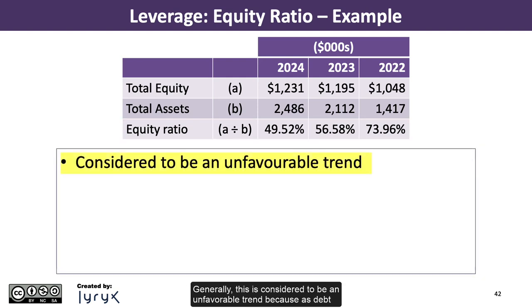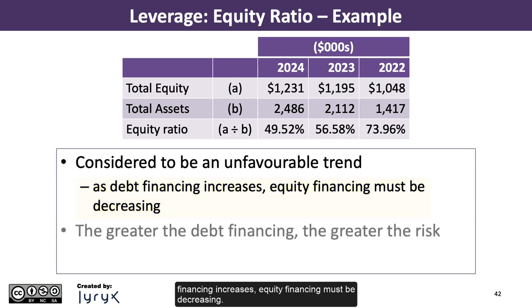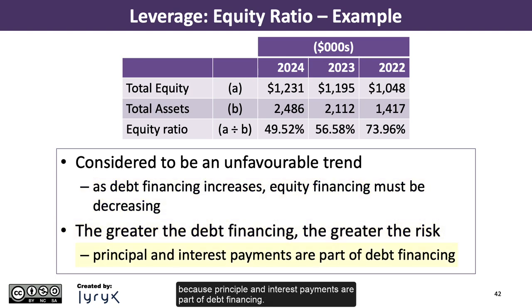Generally, this is considered to be an unfavorable trend because as debt financing increases, equity financing must be decreasing. The greater the debt financing, the greater the risk, because principal and interest payments are part of debt financing.